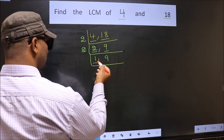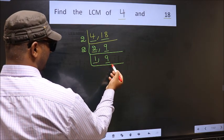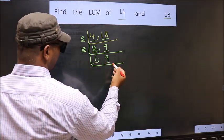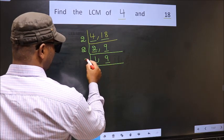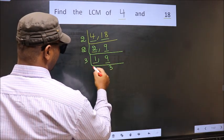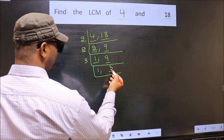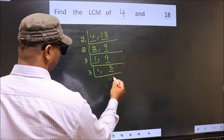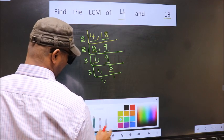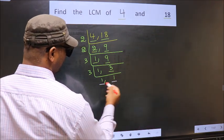Now here we got 1, so focus on the other number, 9. Next number is 9. It goes in the 3 table. 3 times 3 is 9. Now we have 3. 3 is a prime number, so 3 times 1 is 3.